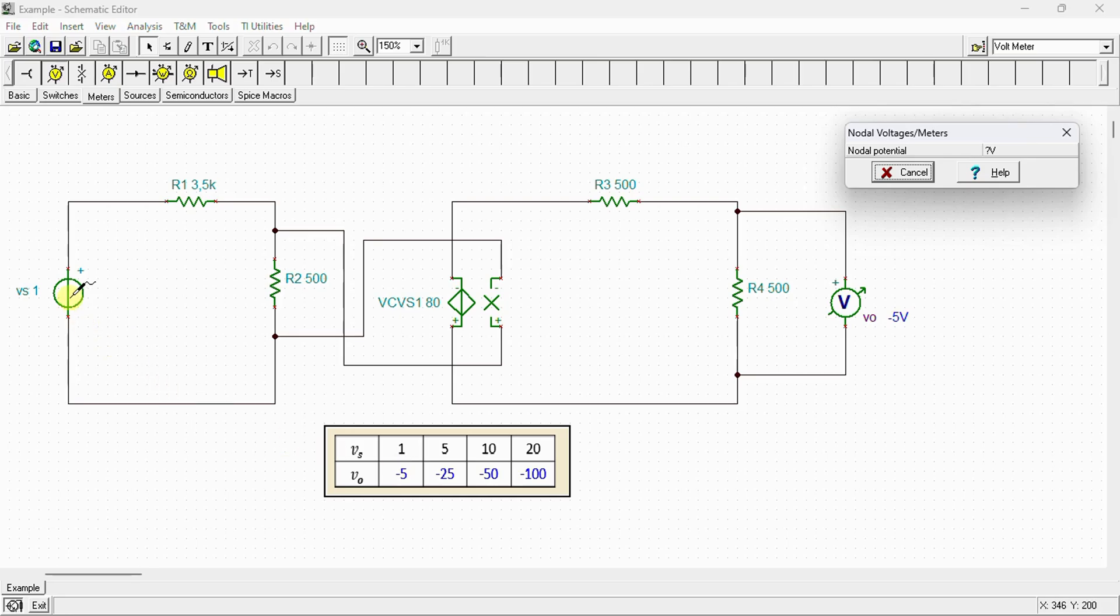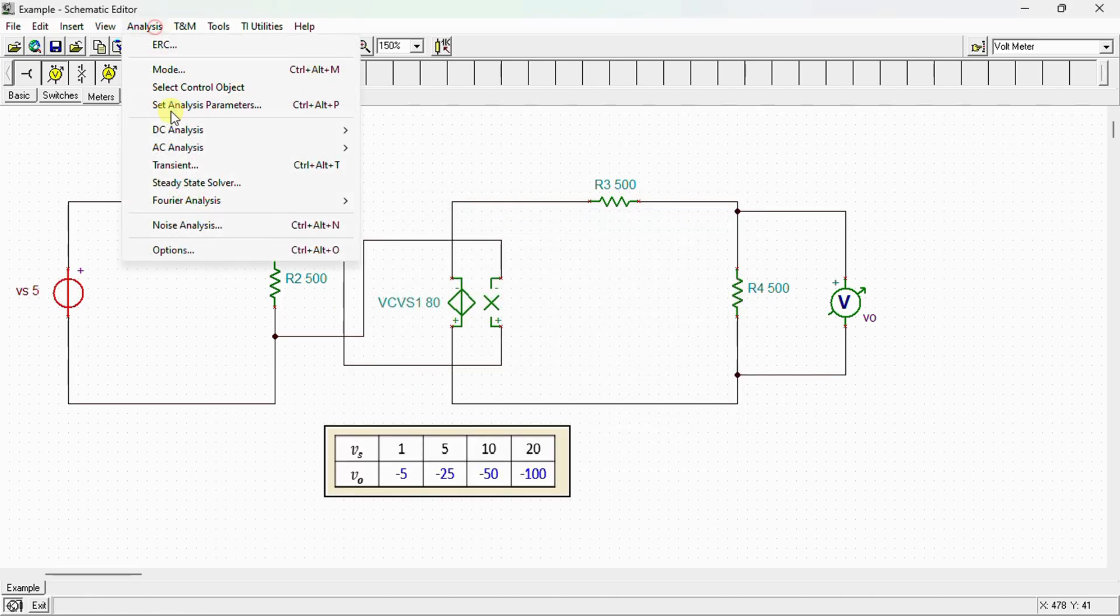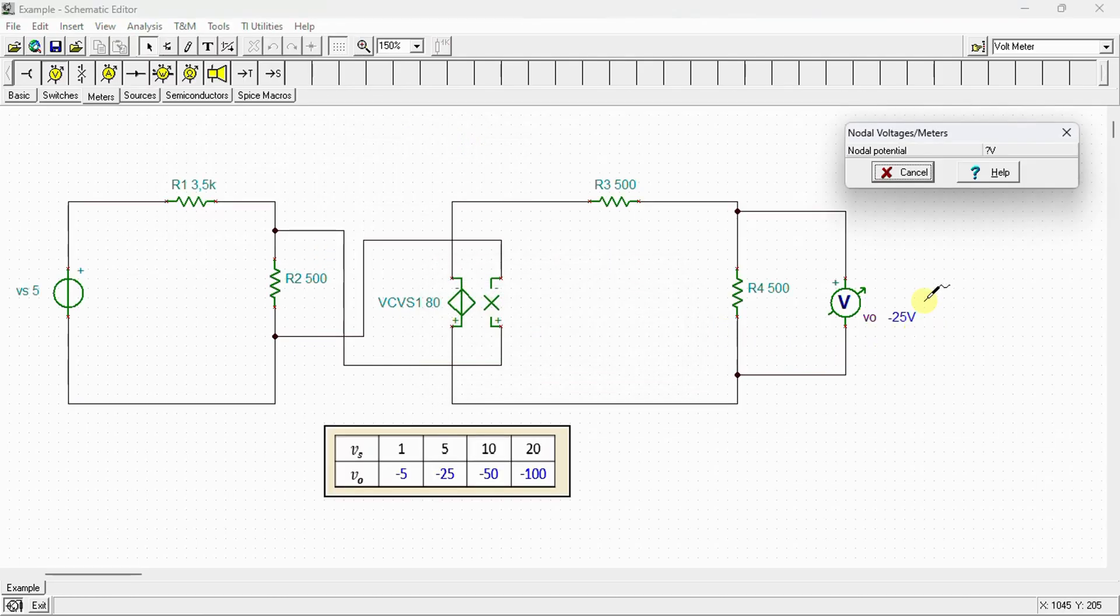Let's change vs to 5V. Again, Analysis, DC Analysis, Calculate Nodal Voltage shows that vo = -25V. We do the same